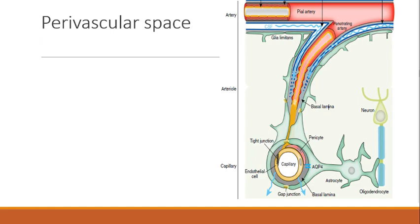Regarding perivascular spaces: in the CNS we have the anterior and posterior cerebral circulation, from which we get leptomeningeal (pial) arteries. From the pial arteries arise penetrating arteries that dip down from the cortex into the brain parenchyma, creating a surrounding space called the Virchow-Robin space, into which CSF flows from the subarachnoid space. This CSF then travels toward the capillaries and is finally absorbed into the perivenous space.